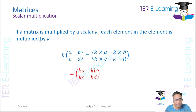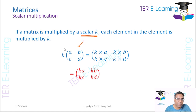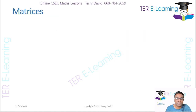Now, if a matrix is multiplied by a scalar, then each element of the matrix has to be multiplied by the scalar. So if I have a two-by-two matrix and I want to multiply it by some constant k, all I need to do is take that k and multiply by every single element inside of that matrix.